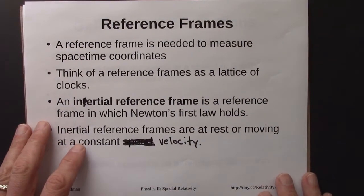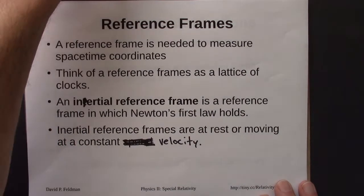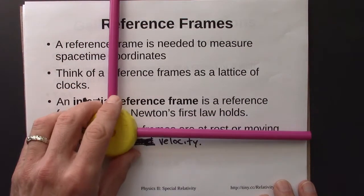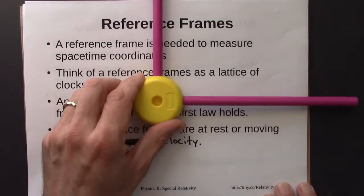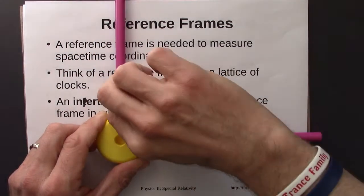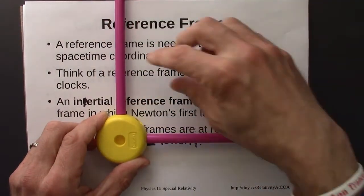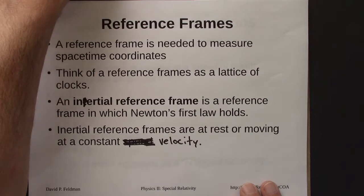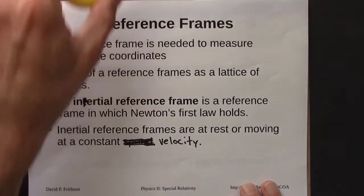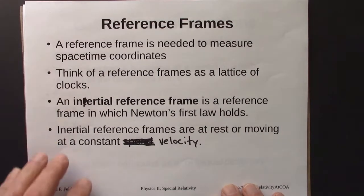We talked about reference frames. A reference frame is needed to measure spacetime coordinates. It's a coordinate axis. You need to choose a zero point, and then you can measure in the x direction and measure in the y direction, and you'll need to have clocks spaced along your coordinates so that you can measure time as well as position.